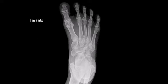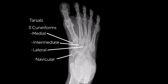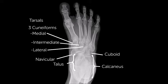Tarsals of the foot include three cuneiforms described for their position across the foot, as well as the navicular, the cuboid, and the talus and calcaneus — which are not well visualized on an AP film.